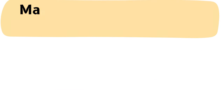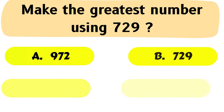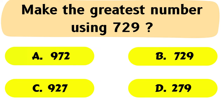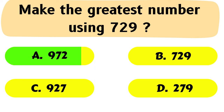Question No. 20: Make the greatest number using 7, 2, 9. The correct answer is Option A: 972.